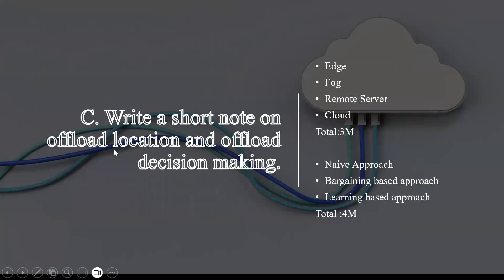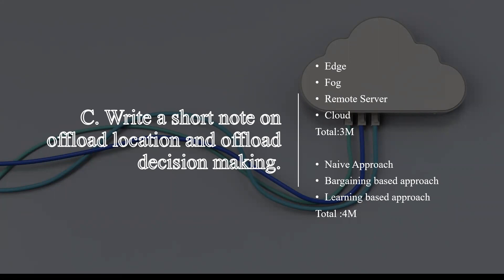Write a short note on offload location and offload decision making. For offload location — three marks — the criteria are: edge, fog, remote sensor, and cloud. List these and write small, important points about what each one is: edge, fog, remote server, and cloud.